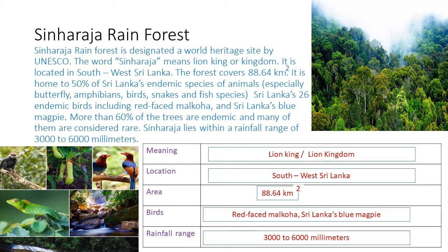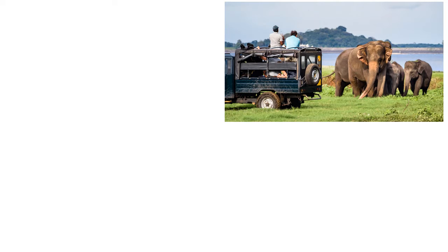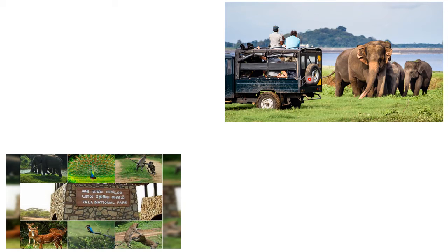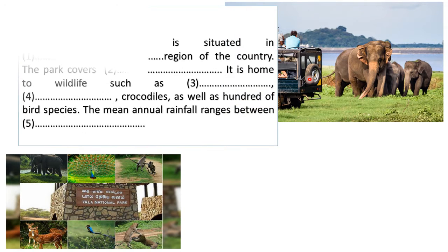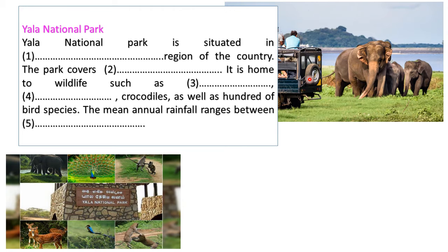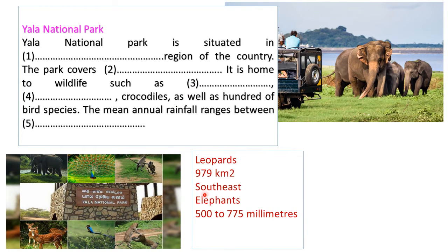Let's move on to our next place. Elephants are there and there are some tourists. Yes, this is Yala National Park. Here is a description about Yala National Park, but it has some blanks. You need to fill the blanks using the given words. Let's read the given words.